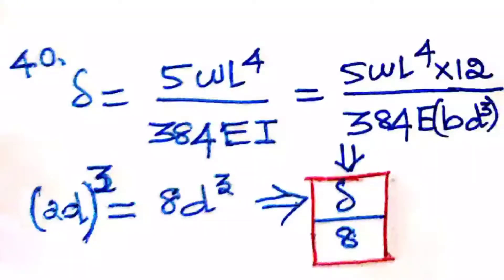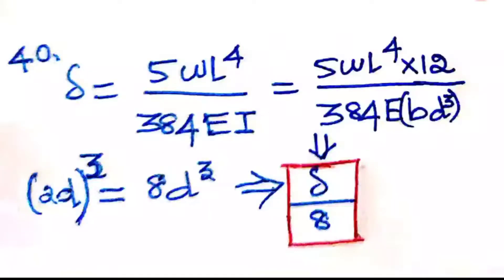For the given beam with UDL running all over the span, the deflection formula is δ = 5wL⁴/(384EI). This is the normal deflection formula, which equals y. If the depth is doubled, what will be the deflection?